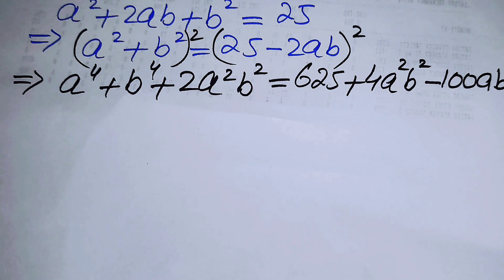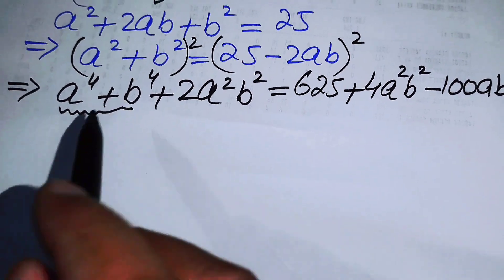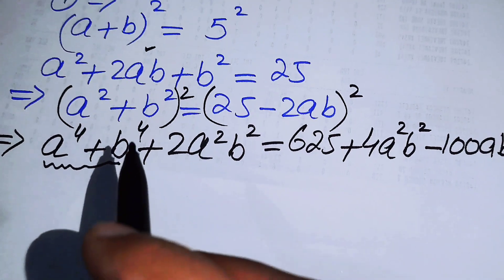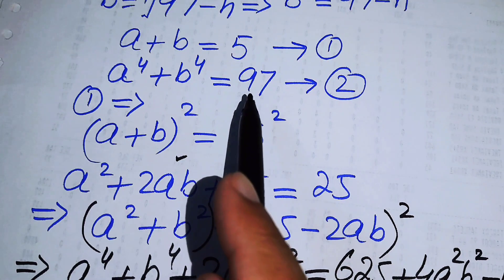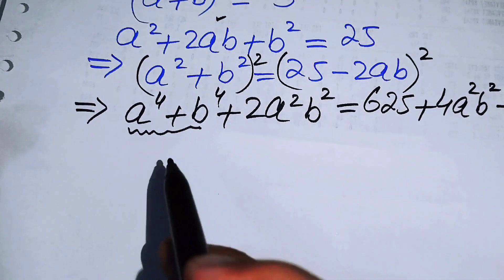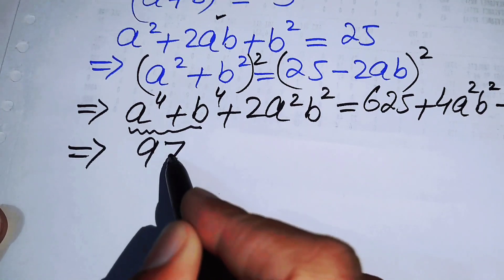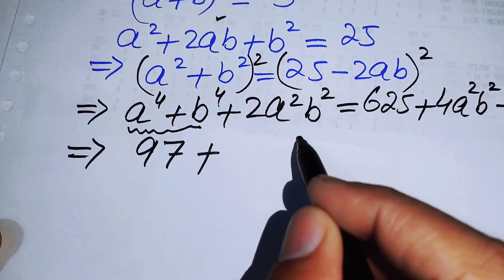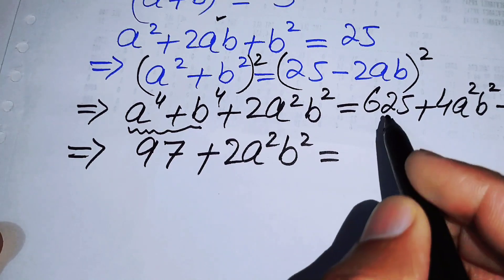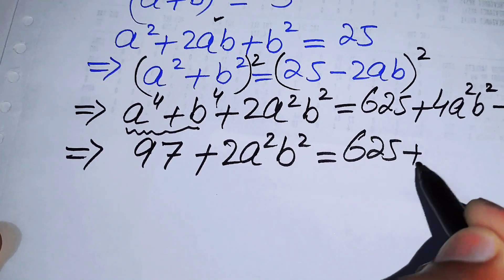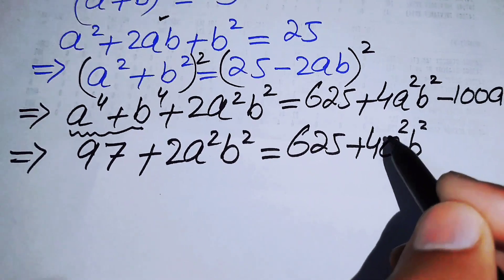Rearranging, we identify a⁴ + b⁴ and substitute equation 2: 97 + 2a²b² equals 625 + 4a²b² minus 100ab. Moving all terms to one side gives 4a²b² minus 100ab plus 625 minus 97 minus 2a²b² equals 0.